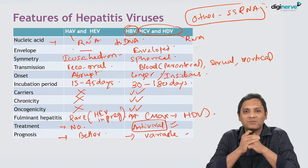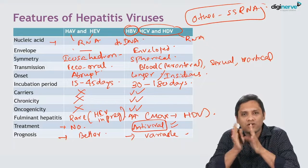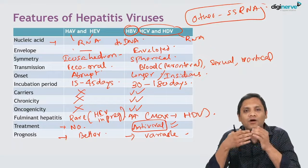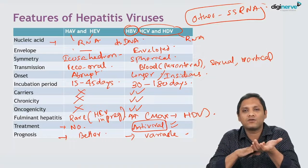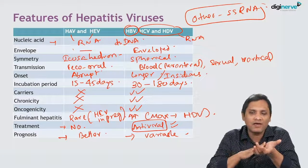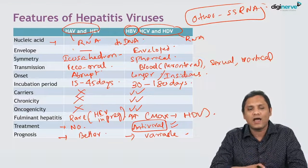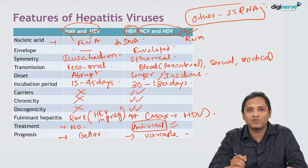In summary, A and E are transmitted by the feco-oral route, cause only acute infection, do not become carriers, and do not develop into hepatocellular cancer or cirrhosis. Whereas B, C, and D have a high propensity for carrier state, chronicity, and hepatocellular cancer. A and E have a shorter incubation period and abrupt onset, while B, C, and D have a longer incubation period.